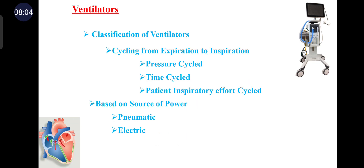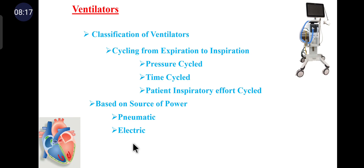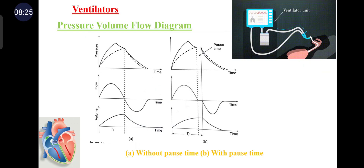Classification based on source of power includes pneumatic and electric. Pneumatic means the ventilator is powered by compressed gas, whereas electric means the ventilator is powered by an electrical device such as an electric motor or similar gadget.